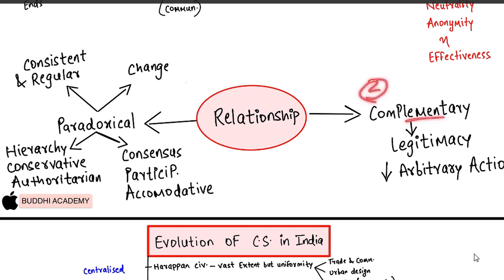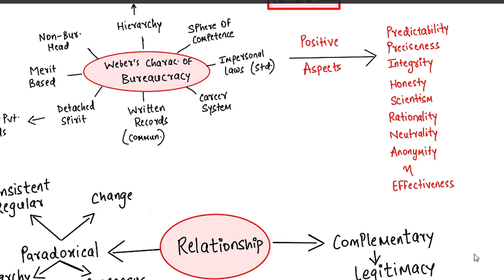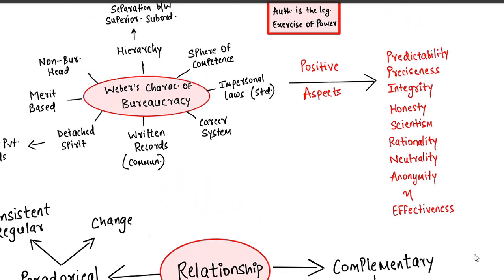अब हम relationship के दूसरे part पर बात करते हैं - जहाँ civil services democracy को compliment करती है। जैसा Weber की characteristics बताते हुए कहा था - integrity: जो सोचते हो वही बोलो, जो बोलते हो वही करो। Thought, speech, action एक जैसे होने चाहिए। Scientificism पर काम करो, rationality develop करो, neutrality रखो। इस तरह civil services government के arbitrary actions को कम करती है।